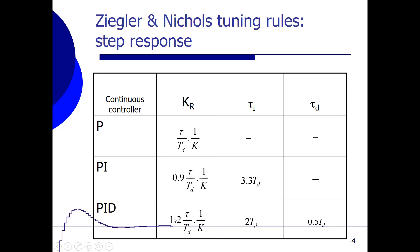And when we had a PID controller, then K_R was the same value as in the P-controller, but multiplied with 1.2 due to the derivative action over here. And we can set tau_i to 2 times delay time, and we can set tau_d to 0.5 times delay time.